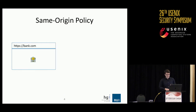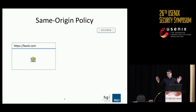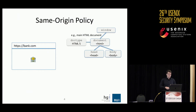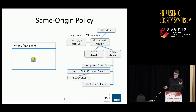So first, the introduction and foundations. Imagine the following case: we have a website in Google Chrome called hgpsbank.com. HTML, CSS, and JavaScript are loaded. When we look into the document object model — the DOM — the root element is the window element. Under the window element we have documents, a doctype, HTML5, HTML4.01, a header, body, and deeper elements like script, image, link, and iframe.